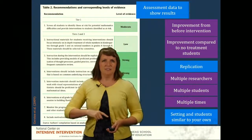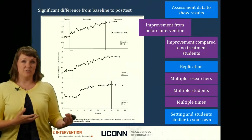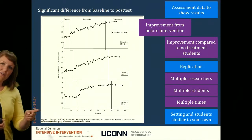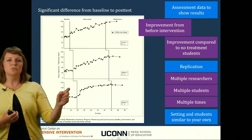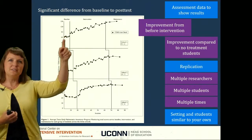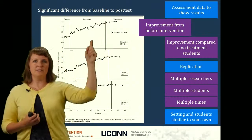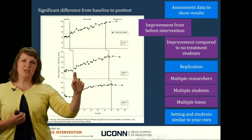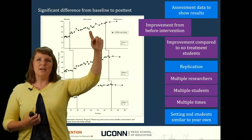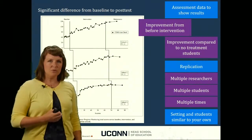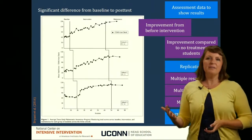One of the things we want to see is improvement from before intervention to after the intervention. This is a study by Diane Bryant and her research team, showing data in school one, school two, and school three. What I want to see is what the students were doing collectively before the intervention — and then once the intervention was implemented, you can see student scores increased. Before intervention, and then during and after intervention — the students in those schools improved from before the intervention. That tells me there's an evidence base for what they were teaching.